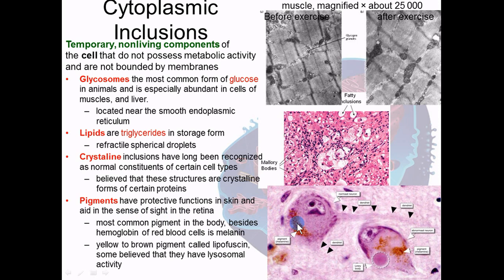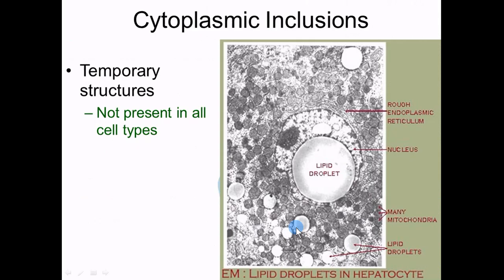The last type of inclusion is pigments — just dyes. Hemoglobin in red blood cells, melanin in skin cells, and ferritin are examples. Lipofuscin is yellowish in color and can accumulate from too much sun exposure, giving you liver spots that don't go away. Here's an example of a hepatocyte with a large lipid droplet smashing the nucleus to the side. Having too many lipid droplets, as with alcoholism, can accumulate and smash the mitochondria and other organelles, ultimately killing the cell.